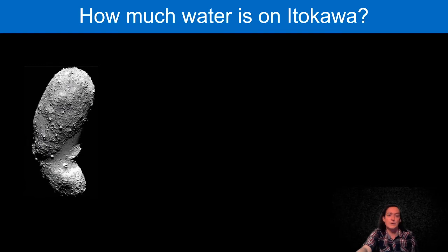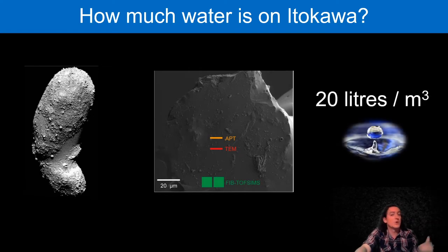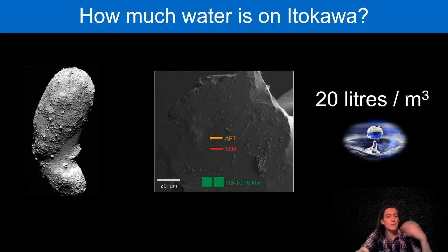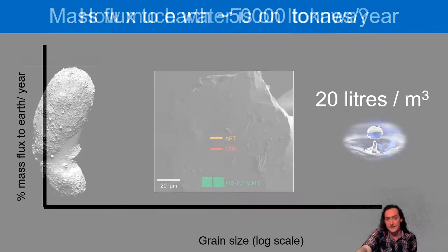In fact, if you take Itokawa as an example and you said, okay, let's have one meter cubed of regolith, how much water would I have from this process? You're talking on the order of 20 liters per meter cubed. So this is substantial and it's got us thinking maybe this could be a reservoir to help explain this isotopic composition because this water is derived from the solar wind, which is derived from the sun and so should be isotopically light.